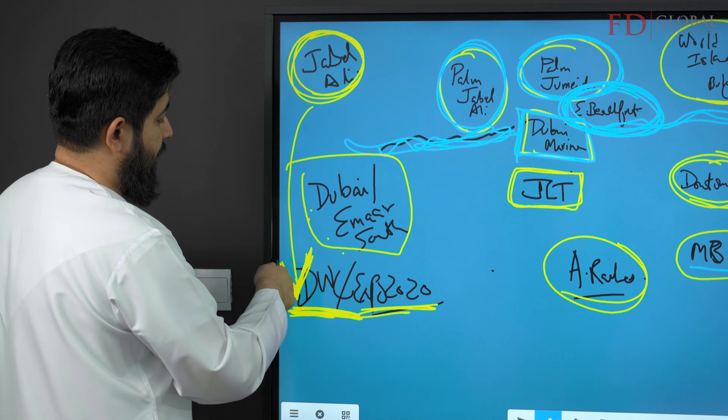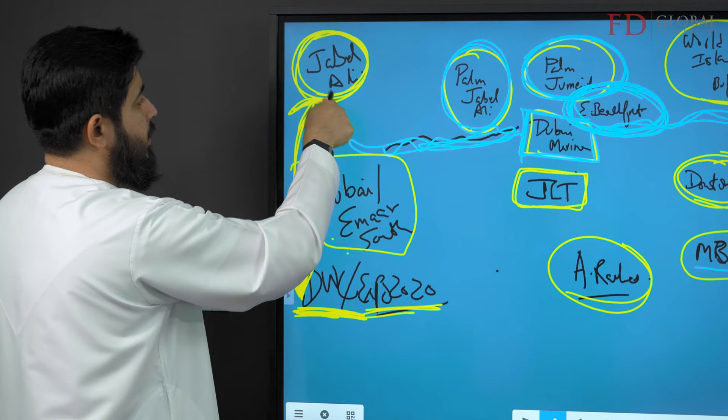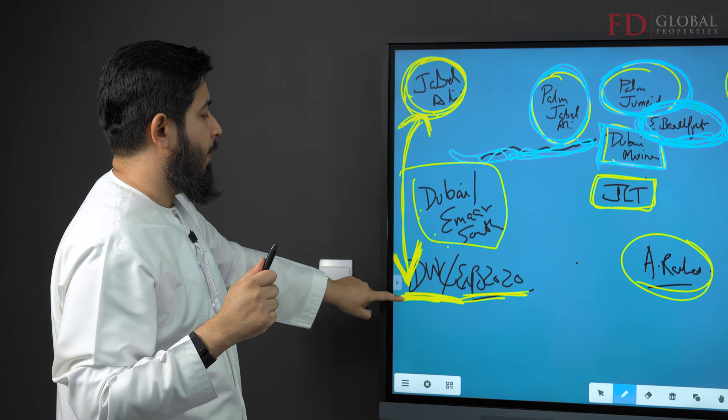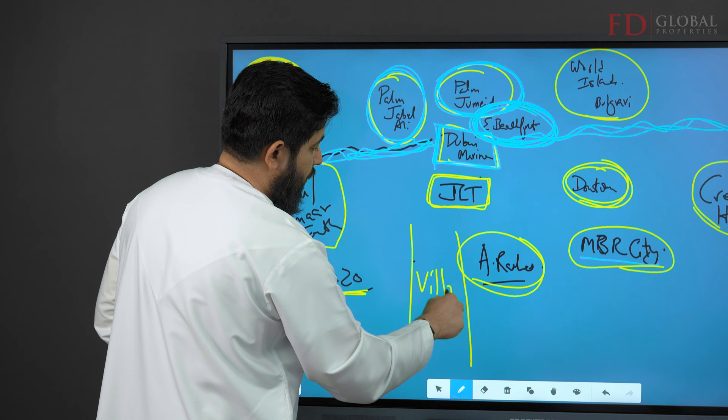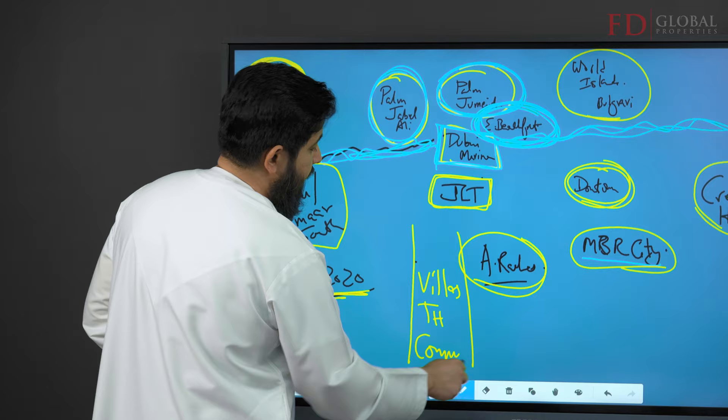Around 2015–16, Dubai South and Emaar South were launched. Dubai World Central has been operating since 2013, and Expo 2020 is in this corridor. Dubai South is designed to be the world's largest aerotropolis, facilitating freight movement between Jabal Ali Port — the world's busiest port — and Dubai World Central, planned to be the world's largest airport. Around this corridor there are also many villa and townhouse communities.